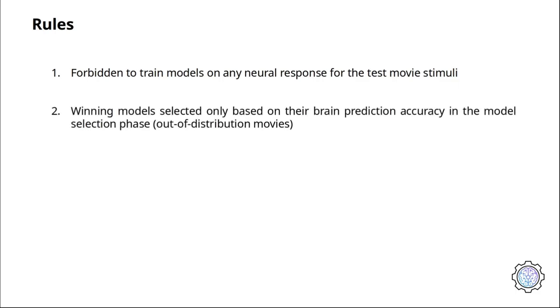The challenge comes with minimal rules. First, we forbid training models on any neural response for the test movie stimuli. Second, since we want to promote more robust models of the brain, the winning models will be selected only based on their brain response prediction accuracy for the out-of-distribution movie stimuli during the model selection phase.